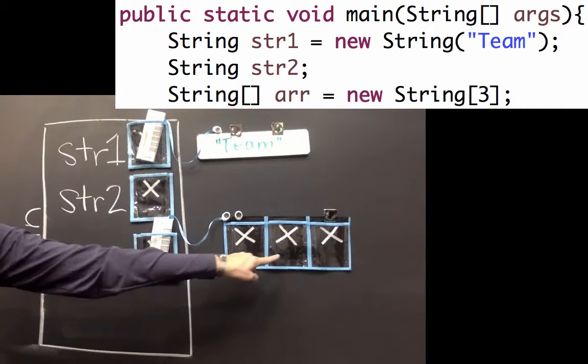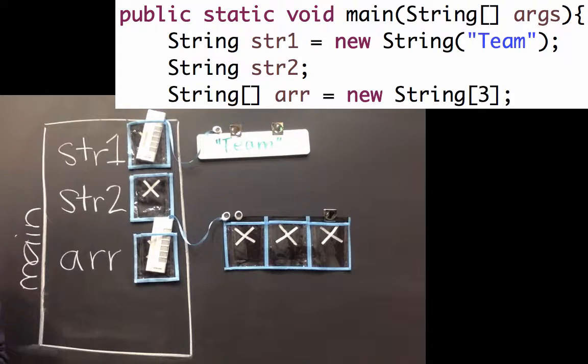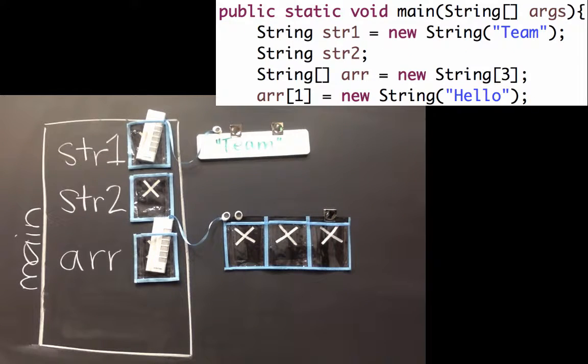It's important to note that all three of those variables inside of the string array are null. You could imagine we could set them.